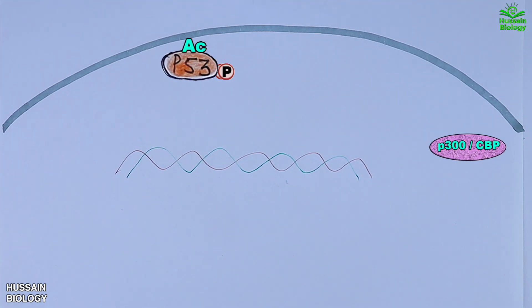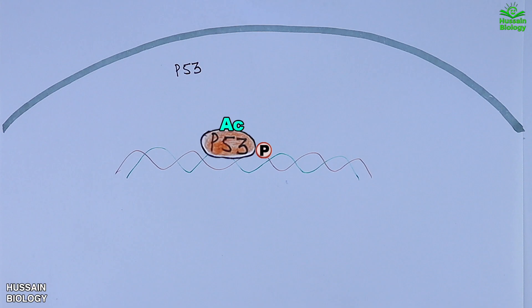Now acetylated p53 molecule has higher affinity for DNA binding. It then comes in and binds with the DNA molecule as shown in the animation.